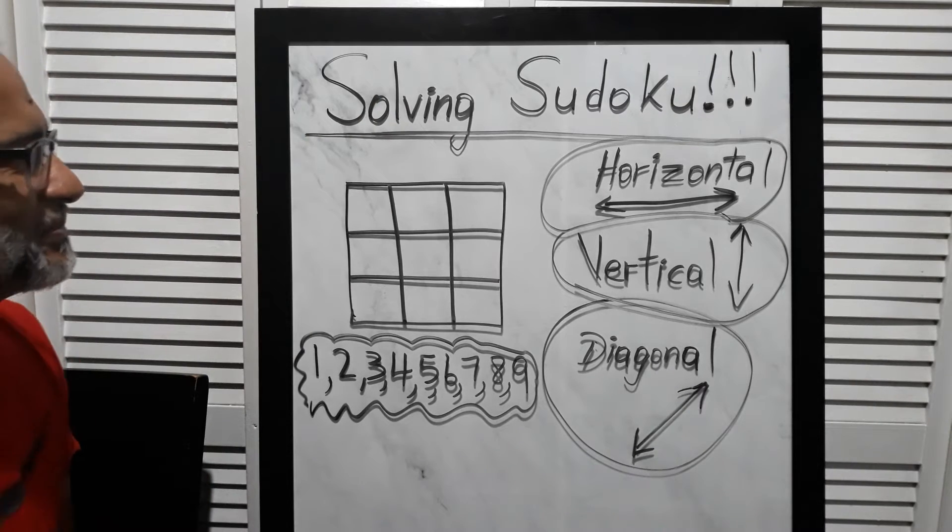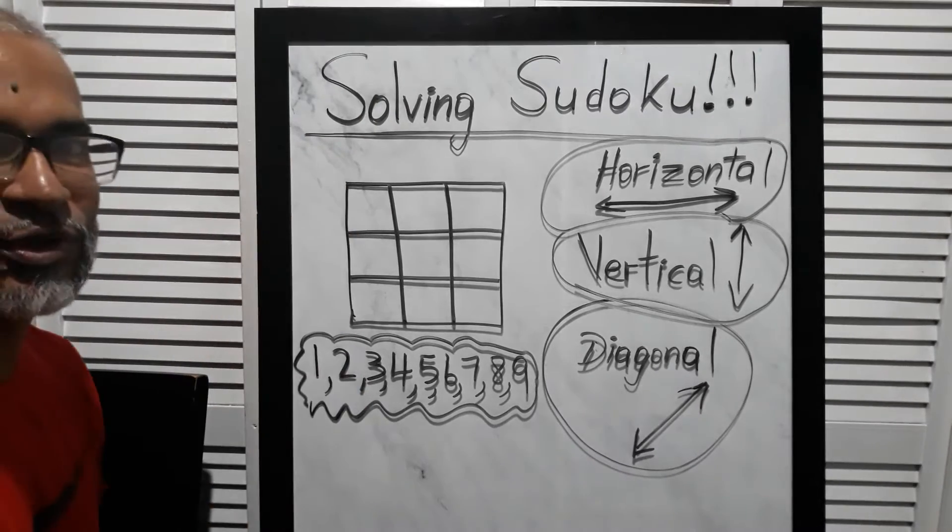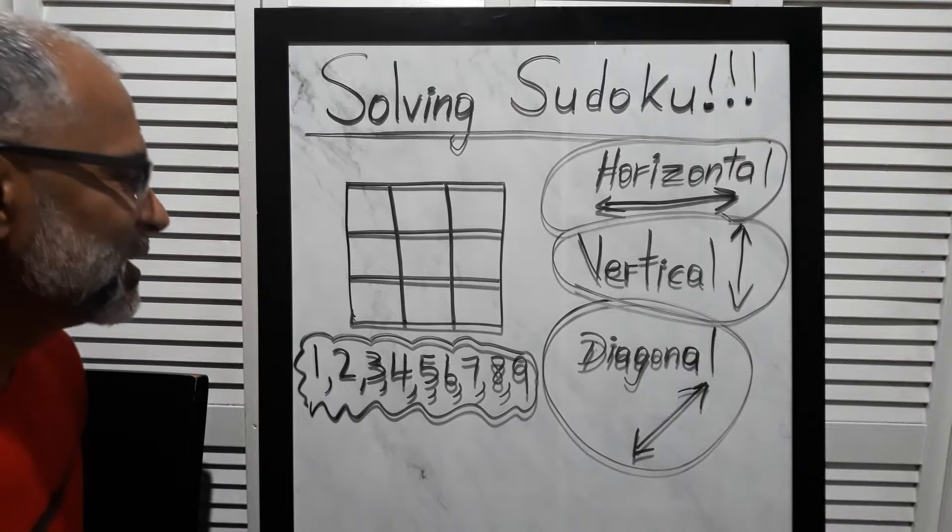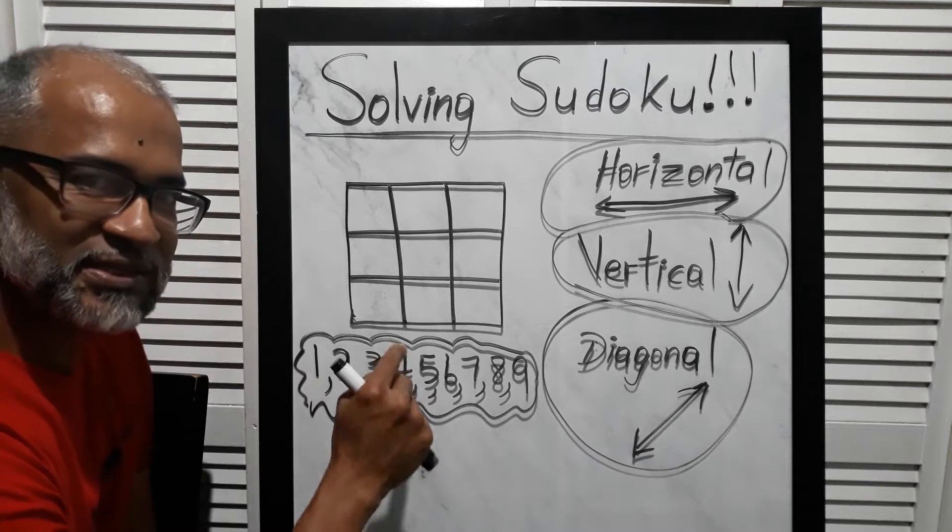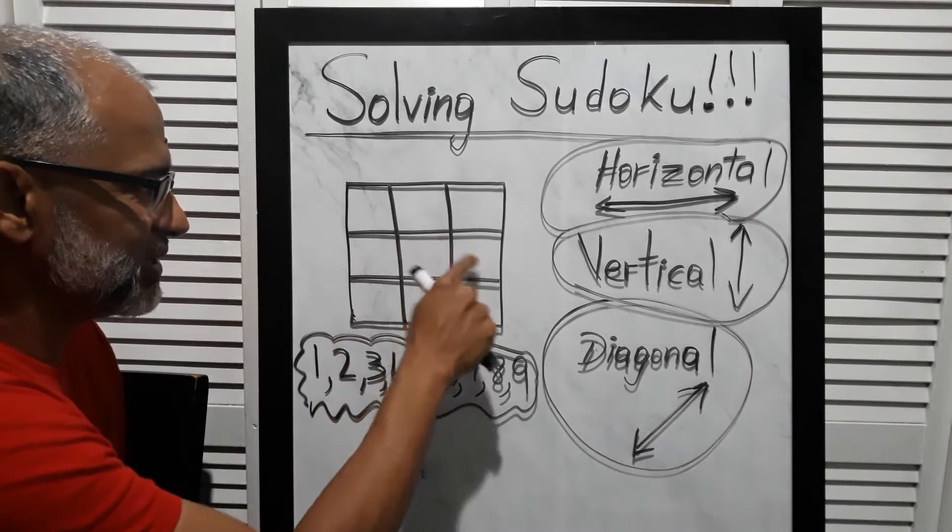Hello friends. This is what you call solving the Sudoku. We want to put these nine numbers—1, 2, 3, 4, 5, 6, 7, 8, 9—in these nine boxes here.